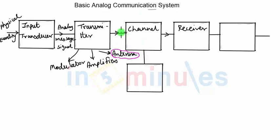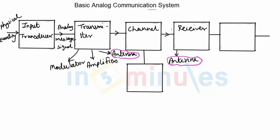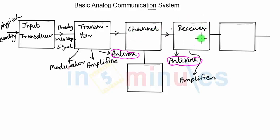The channel can also be a wireless channel, in which case the signal is transmitted through an antenna via a wireless medium and given to the receiver. If it is a wireless channel, the receiver must also have an antenna to receive the signal. The antenna is optional if it is a wired system. The receiver will then have amplifiers, because the signal that has traveled through the channel will be greatly attenuated and needs to be amplified before further processing.